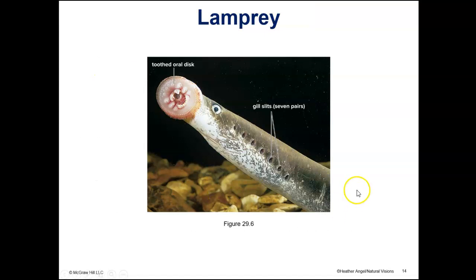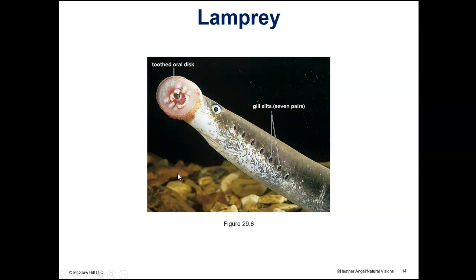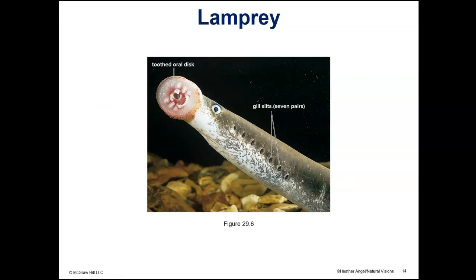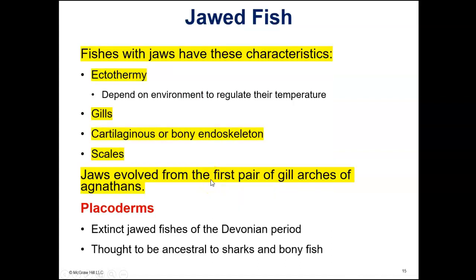This is a picture of a lamprey, and you can see that it has this sucker region. It's a parasite of other fish — you may have seen it attached to other fish. It does have gill slits.